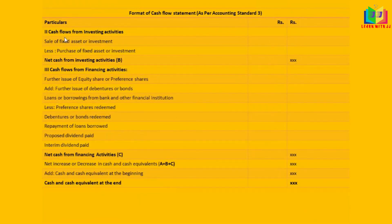Now for cash flow from investing activity, the major items include sale of fixed assets or sale of investments as inflows, and purchase of fixed assets and purchase of investments as outflows. Subtracting these gives us the net cash from investing activity, labeled as B.